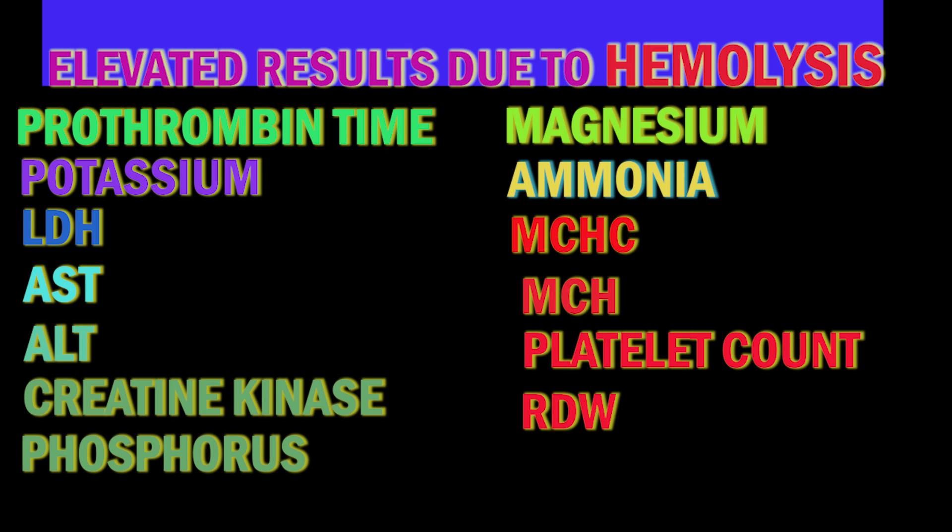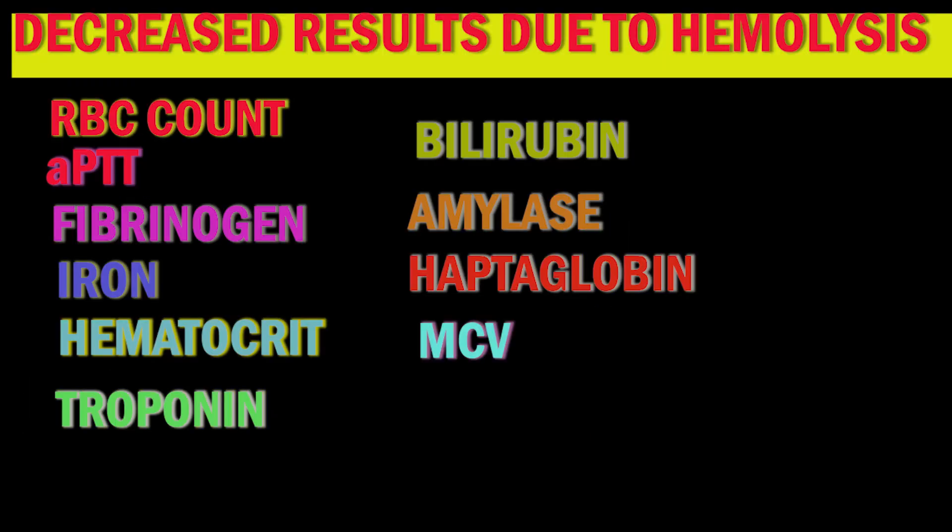Lab test results that are increased in hemolyzed samples include: prothrombin time, potassium, LDH, AST, ALT, creatine kinase, phosphorus, magnesium, ammonia, RBCs, RDW, MCHC, platelet count, and MCH. Decreased test results include: RBC count, APTT, fibrinogen, iron, hematocrit, troponin, bilirubin, amylase, haptoglobin, and MCV.